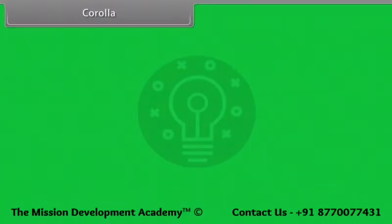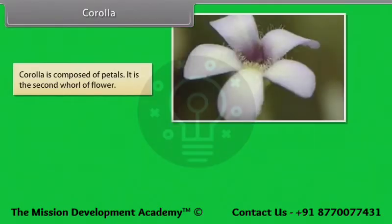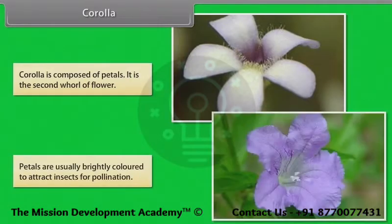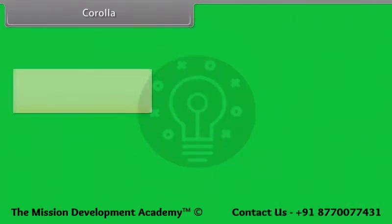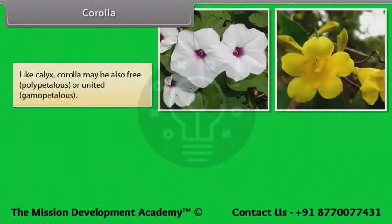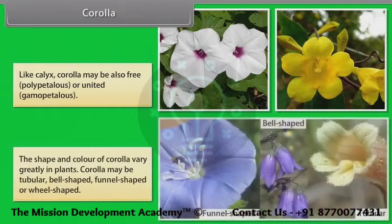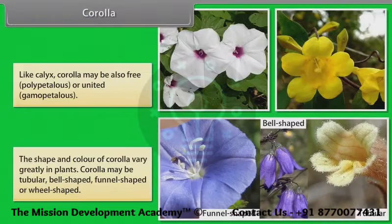Corolla is composed of petals and is the second whorl of the flower. Petals are usually brightly colored to attract insects for pollination. Like calyx, corolla may also be free (polypetalous) or united (gamopetalous). The shape and color of corolla vary greatly in plants. Corolla may be tubular, bell-shaped, funnel-shaped or wheel-shaped.